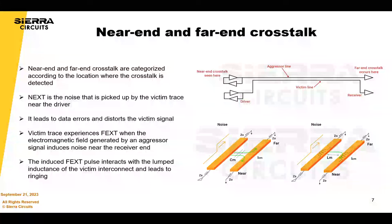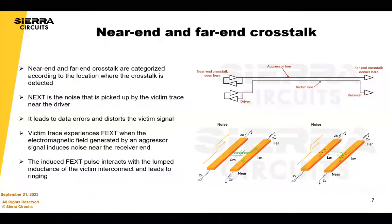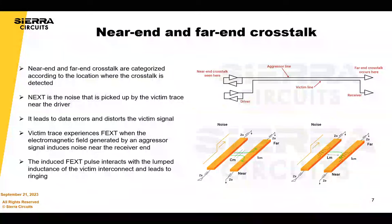Near-end crosstalk (NEXT) and far-end crosstalk (FEXT) are categorized based on the location where the crosstalk is detected. NEXT is the noise picked up by the victim trace near the driver end, and once induced, the victim signal travels in the opposite direction as the aggressor. A victim trace experiences FEXT when the electromagnetic field generated by an aggressor induces noise near the receiver end, and the induced FEXT pulse interacts with the lumped inductance of the victim interconnect, leading to ringing.